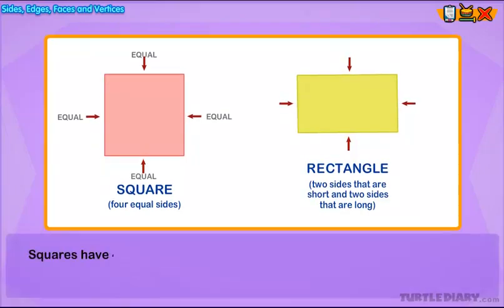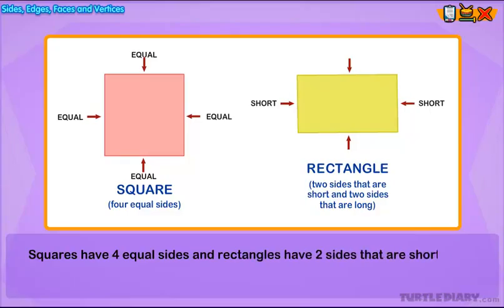Squares have four equal sides, and rectangles have two sides that are short and two sides that are long.